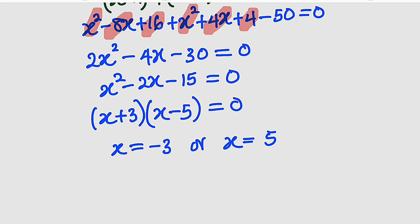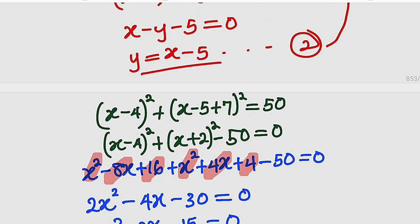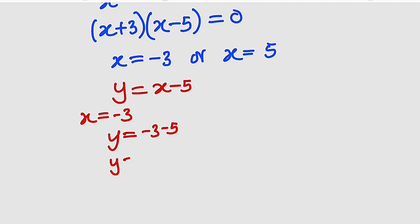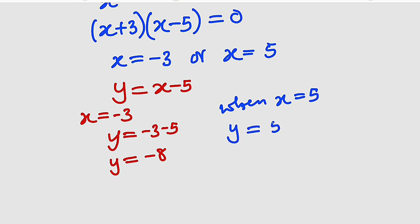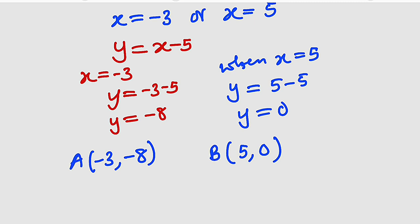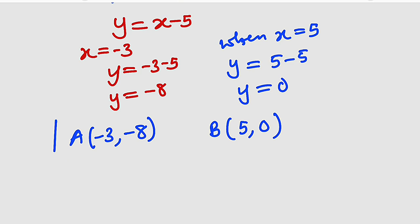To find the corresponding values of y, we use y equal to x minus 5. When x equals negative 3, y equals negative 3 minus 5 which is negative 8. When x equals 5, y equals 5 minus 5 which is 0. So we have two coordinates: negative 3, negative 8 and 5, 0. We can call this B and this A respectively, and hence this is the answer to the first question.